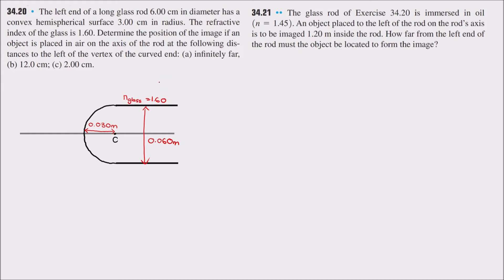We need to determine the position of the image when an object is placed in air on the axis of the rod at various distances to the left of the vertex. Case A has the object at infinity, case B at 12 cm, and case C at 2 cm. We label these as object positions O1, O2, and O3.